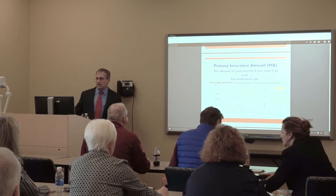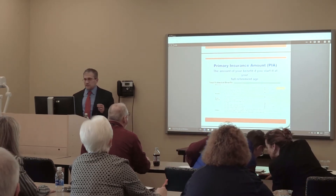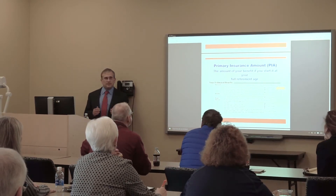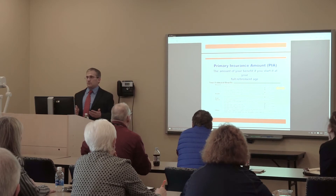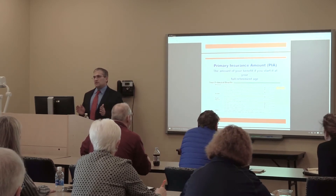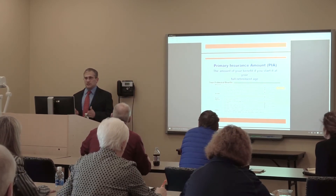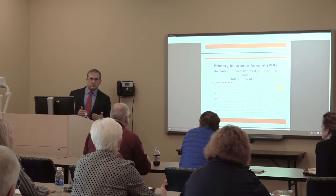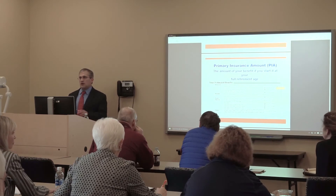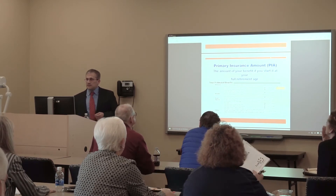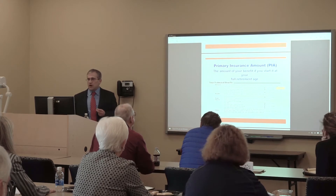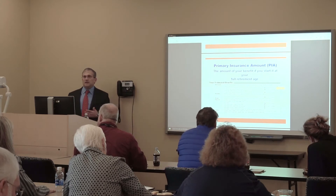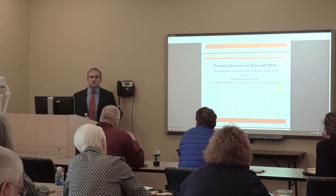This is an example of a Social Security statement. You used to get these every year around your birthday. Now the Social Security Administration has stopped sending them every year — they send them out basically every fifth year. The next acronym we'll refer to a lot is PIA, primary insurance amount. To simplify it, just think of this term as being your Social Security benefit.